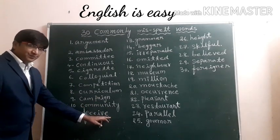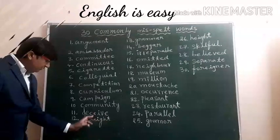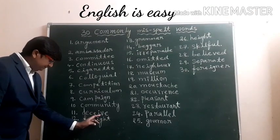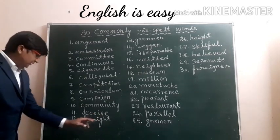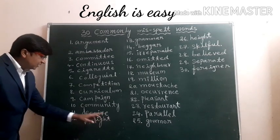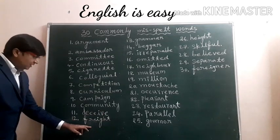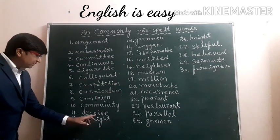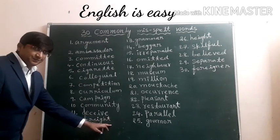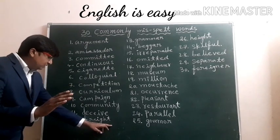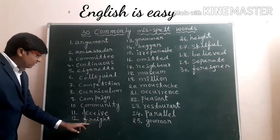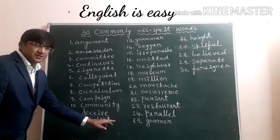Eleventh one: Deceive. When we write this word, we write I-E, but it is E-I, not I-E. Twelfth one: Freight. In freight, we will miss the letter E. Generally we write F-O-R-I-G-H-T. But that's wrong — the correct spelling is F-R-E-I-G-H-T.